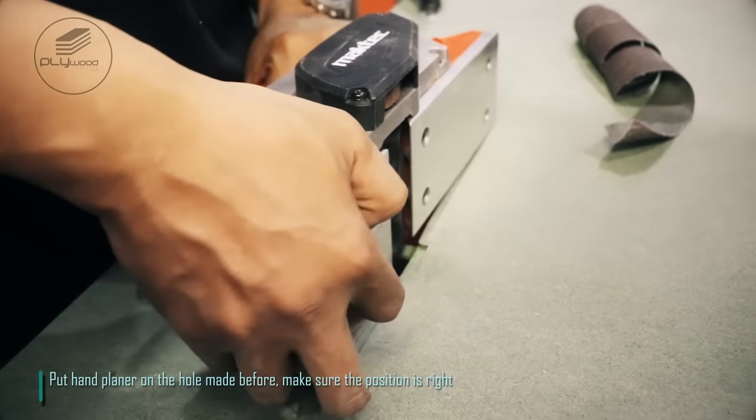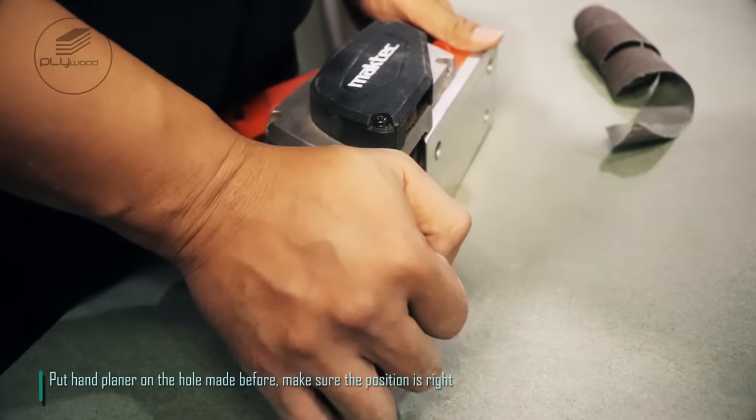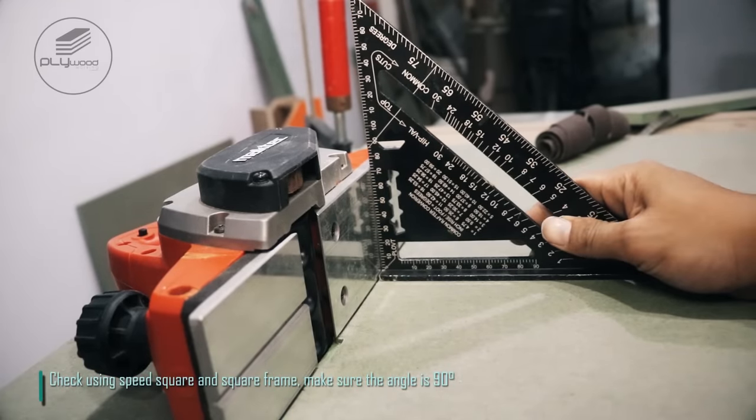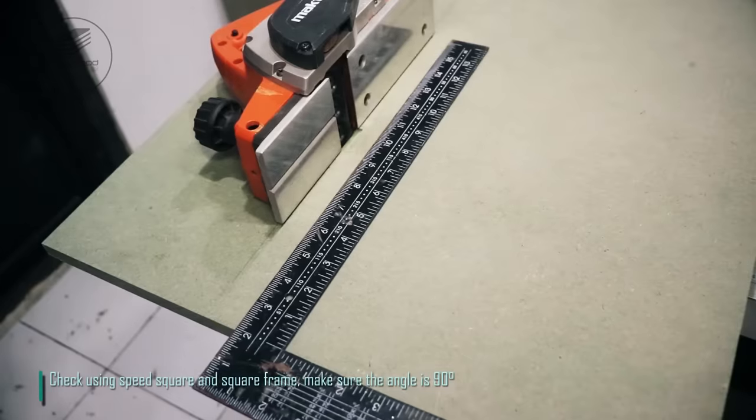Put hand planer on the hole made before. Make sure the position is right. Check using speed square and square frame. Make sure the angle is 90 degrees.